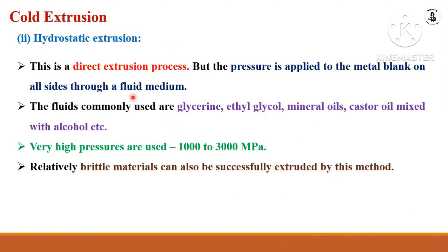Hydrostatic extrusion is a direct extrusion process where pressure is applied to the metal blank on all sides through a fluid medium. Fluids commonly used include glycerin, ethyl glycol, mineral oils, and castor oil mixed with alcohol. Very high pressures are used, in the range of 1000 to 3000 MPa. Relatively brittle materials can also be successfully extruded by this method, but with limitations with respect to the length of the job.